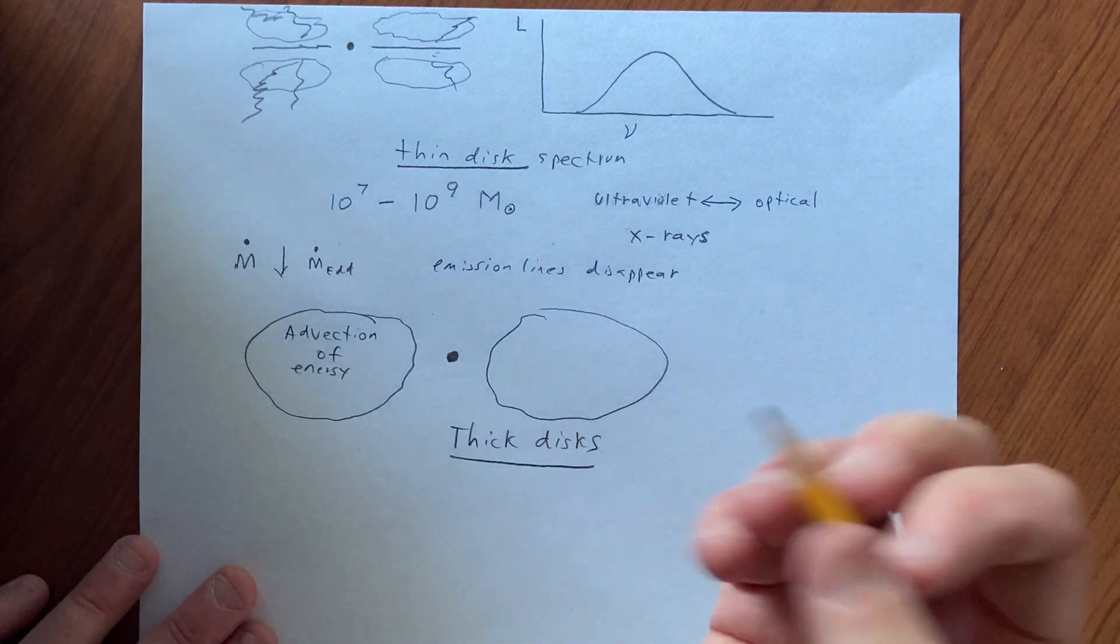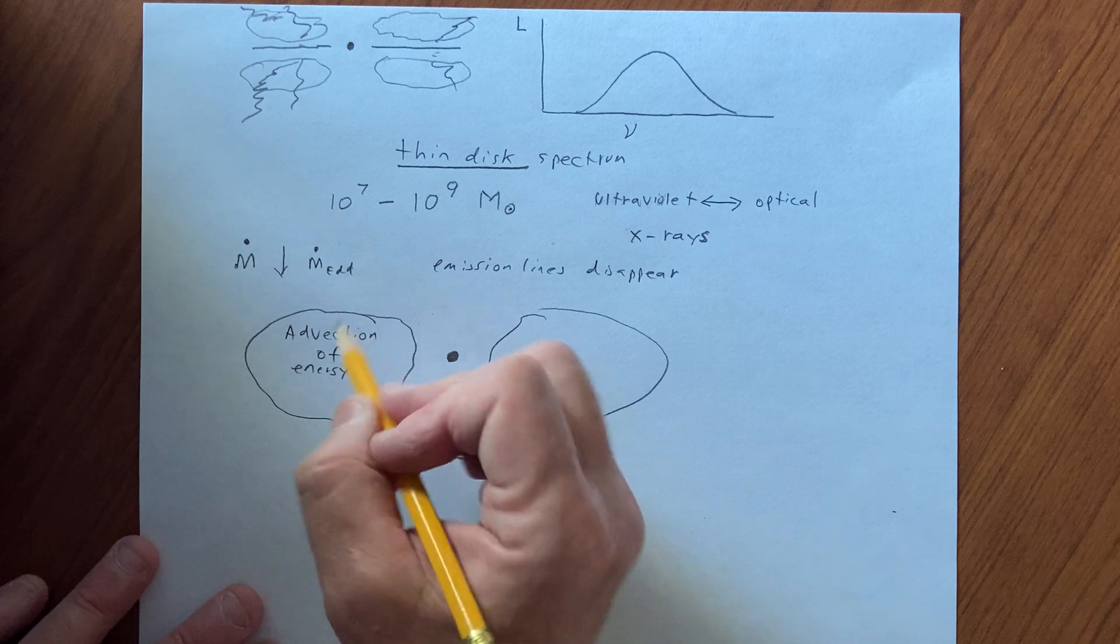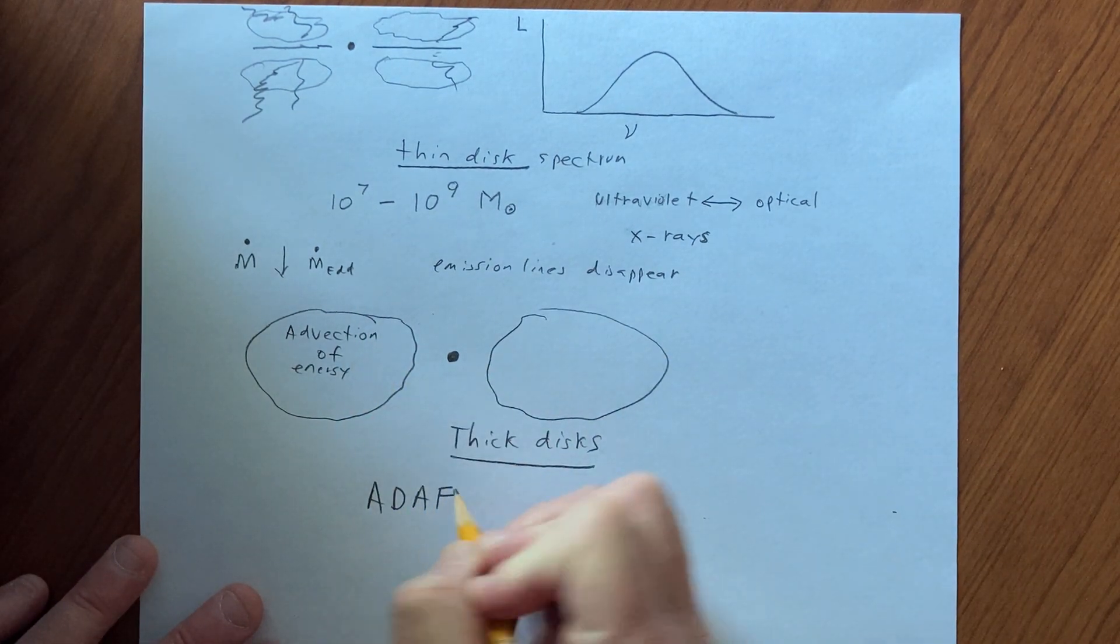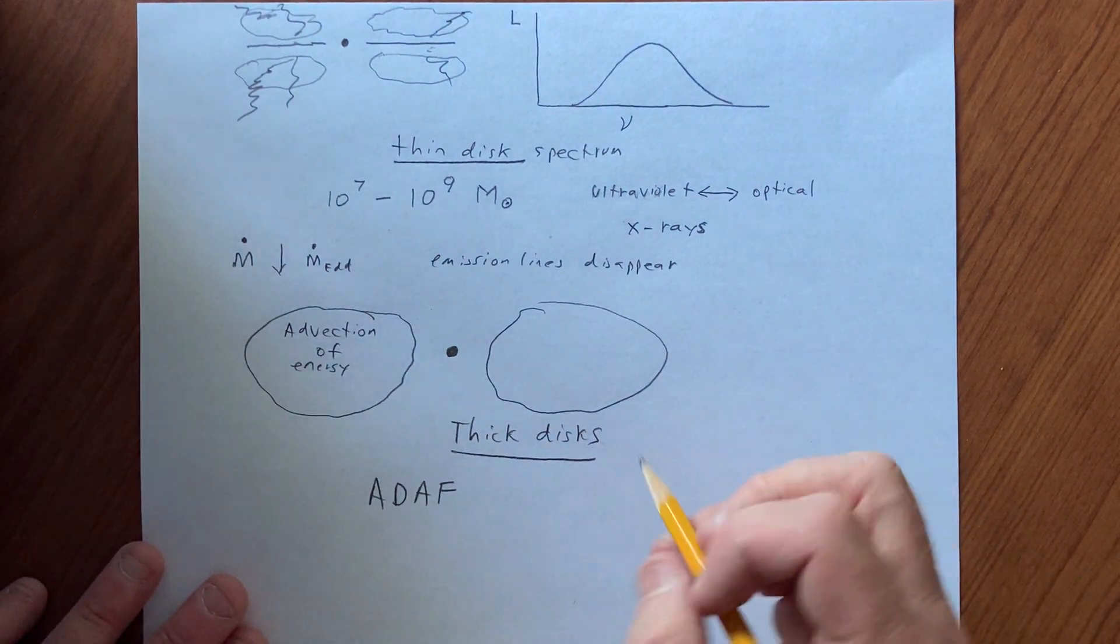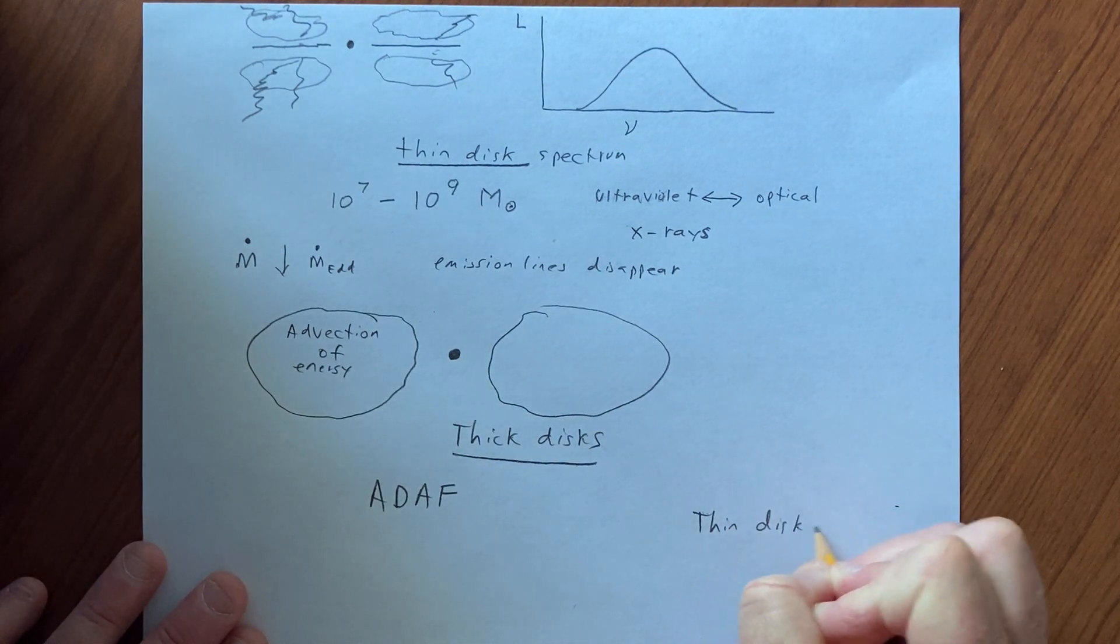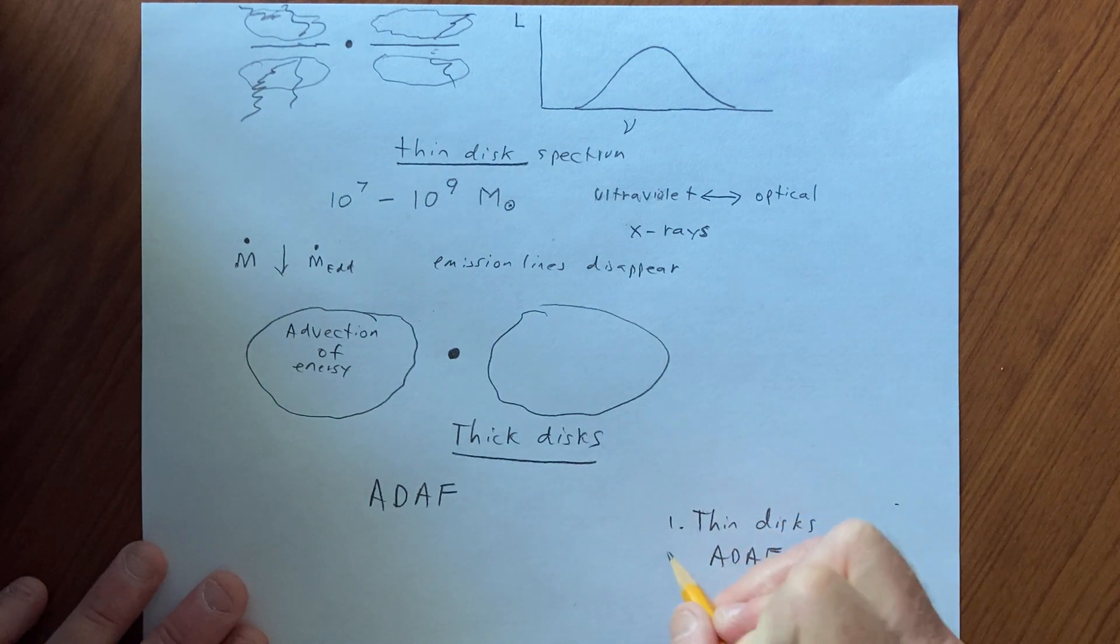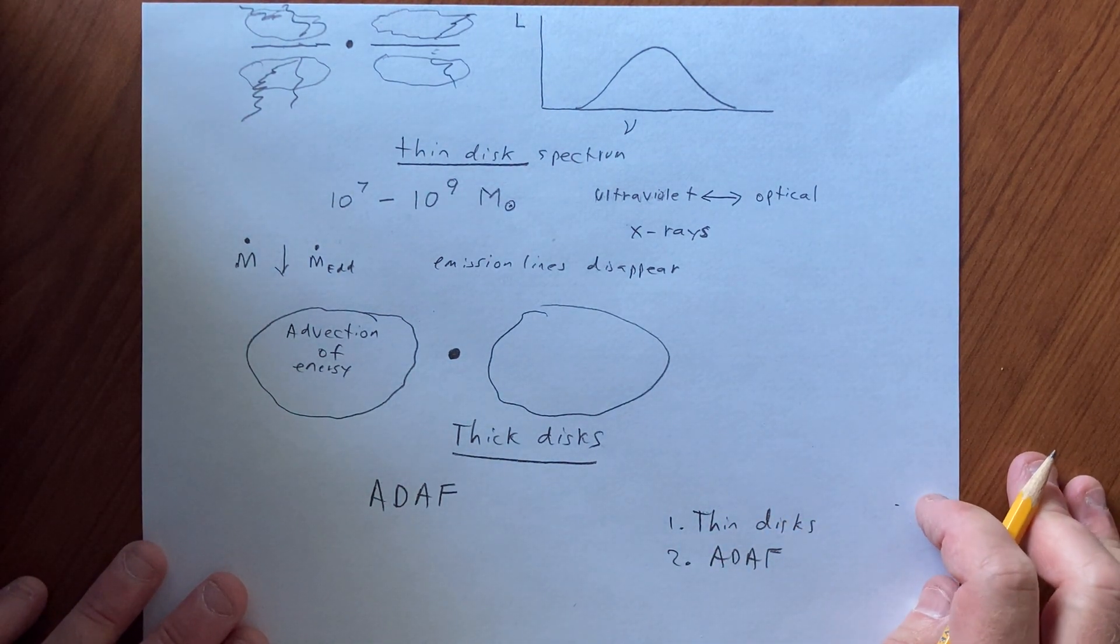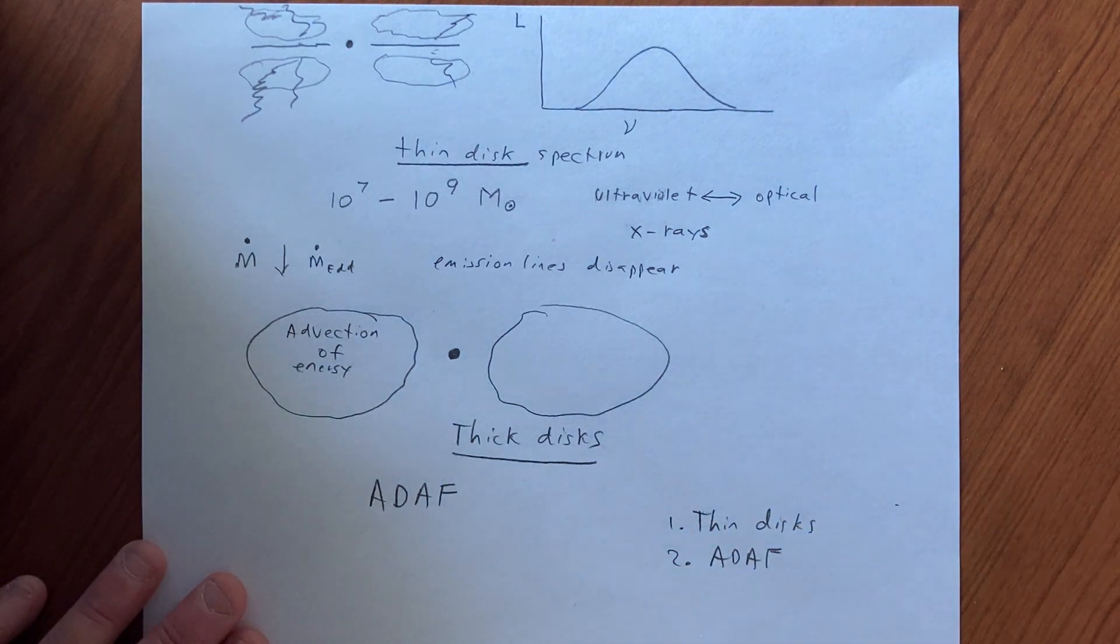The spectrum is very different, so we talk about the advection-dominated accretion flow, and so we talk about ADAFs. Okay, so we're going to be making a theory that basically deals with thin disks and ADAFs, and there are other models as well. We'll make a theory that basically distinguishes between these two kinds of regimes.